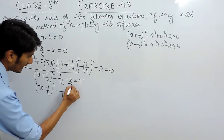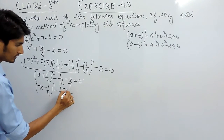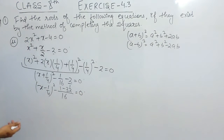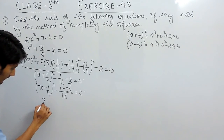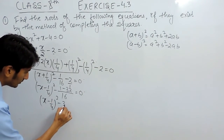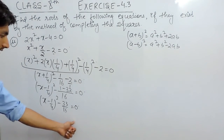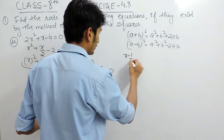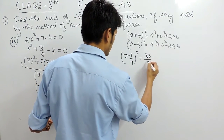We can solve this — minus 16 will be the LCM. This will be minus 1 and this will be minus 32 equals to 0, so the result will be minus 33 upon 16 equals to 0. Now we can simply shift this constant to the other side, so the result will become (x + 1/4)² equals to 33 upon 16.